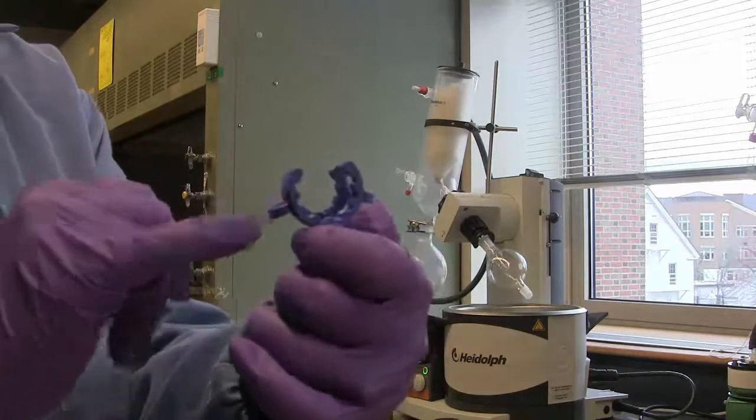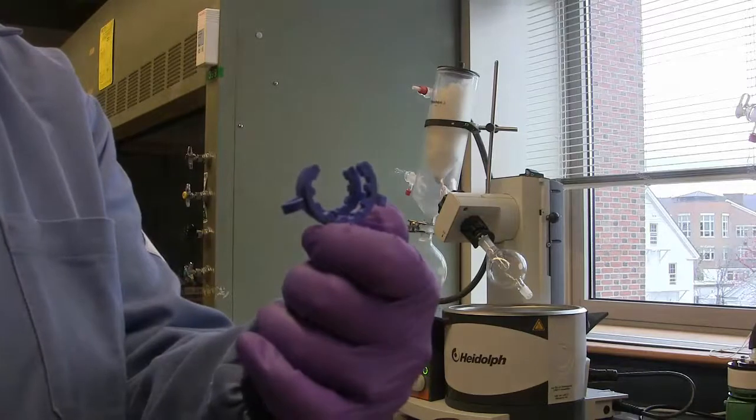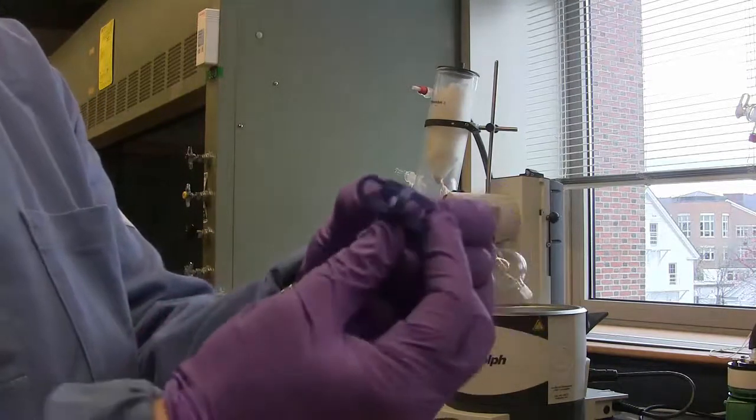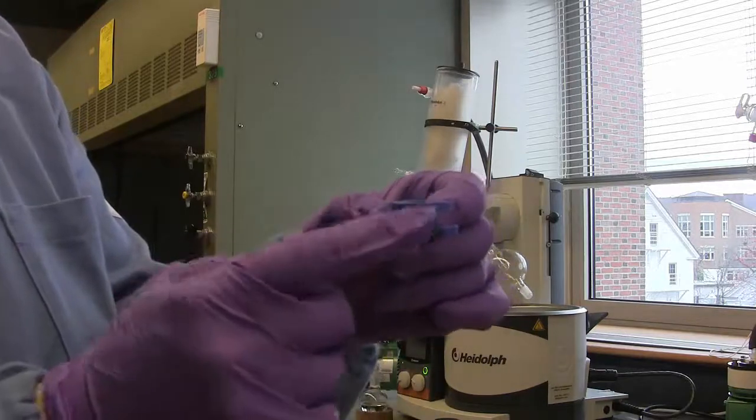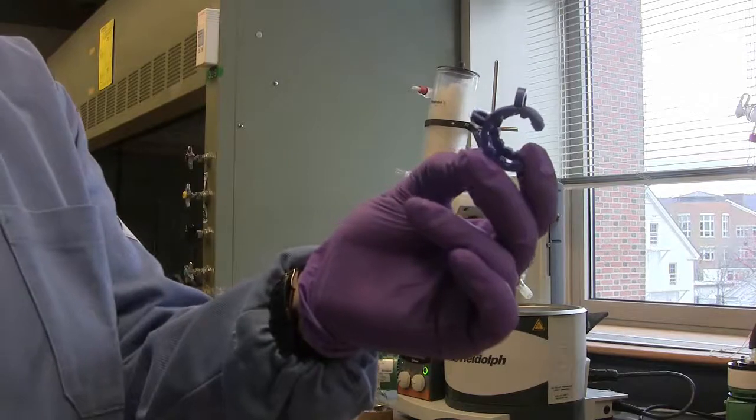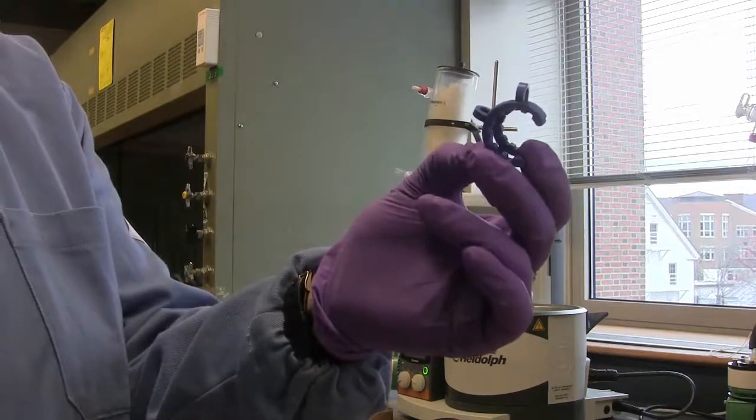And the larger piece should go onto the round bottom flask, or the female joint. Before using a Keck clip, it's always good to check the plastic bridges and make sure that there are not any cracks in the Keck clip. If there are, simply throw the clip away and ask for a replacement.